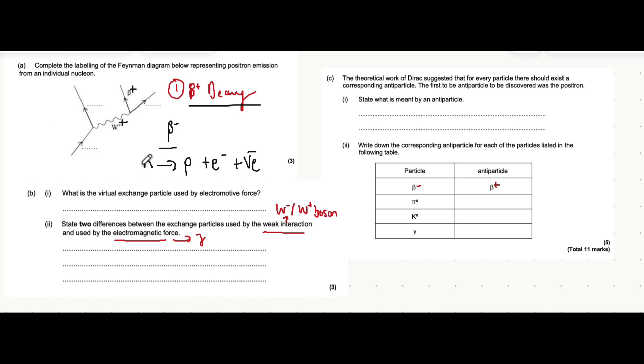Now beta plus decay is the complete opposite. What happens is a proton turns into a neutron emitting the antiparticle of an electron which is a positron and a neutrino, not an antineutrino. So what we write here is, a proton goes into the interaction, turns into a neutron, and along with the positron that's emitted there's a neutrino that's emitted.